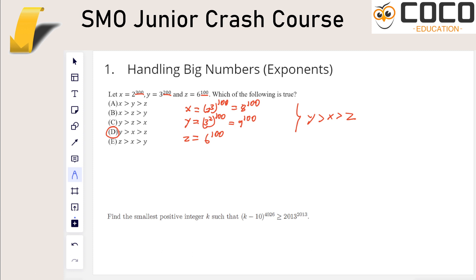For the second question below, I'm not going to give the full solution — I'll only give the idea, and you're welcome to pause and work through it. The key is that 4026 is just two times 2013, which is the other power on the right-hand side. Remember that for the SMO, every constant is there for a reason. If you see 2023 appearing more than once, that's probably there for a good reason.